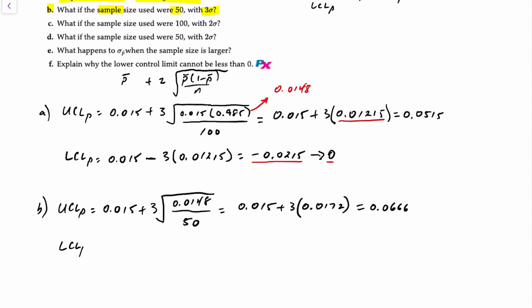The lower control limit is 0.015 minus 3 times 0.0172. You'll also end up with a negative number for that, which means we have to go with 0 for a lower control limit.